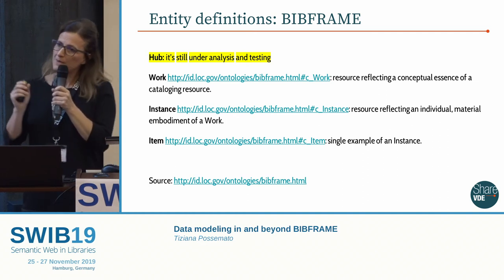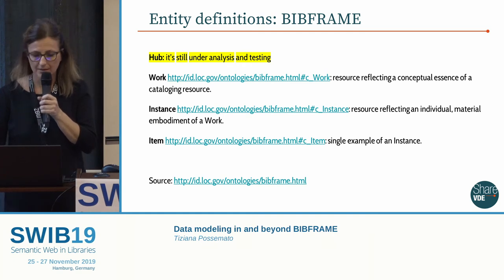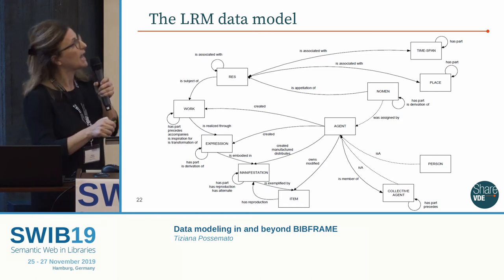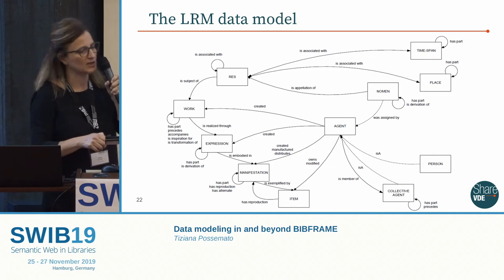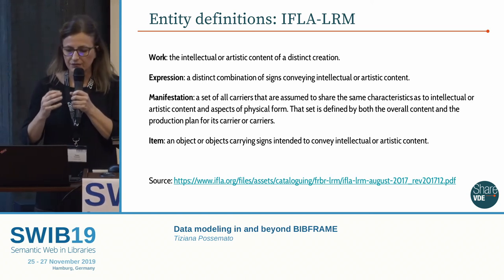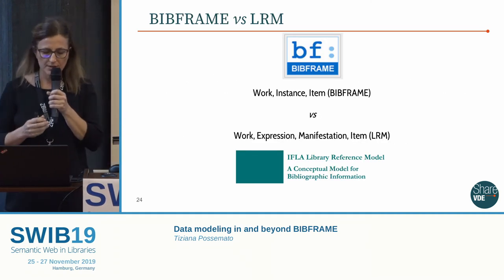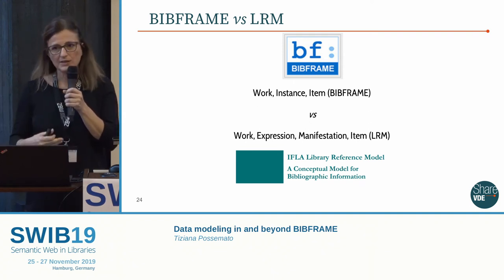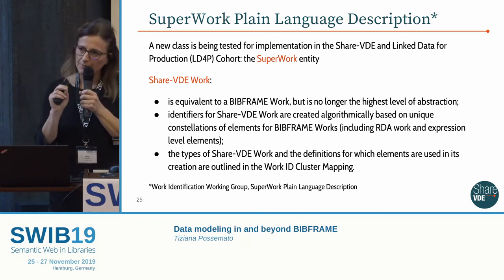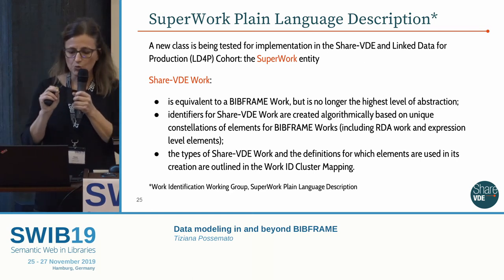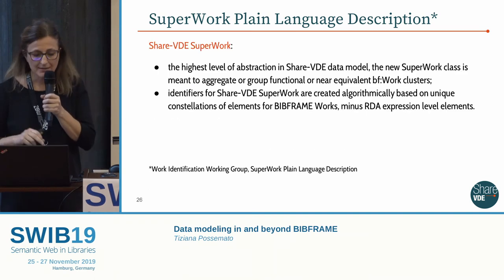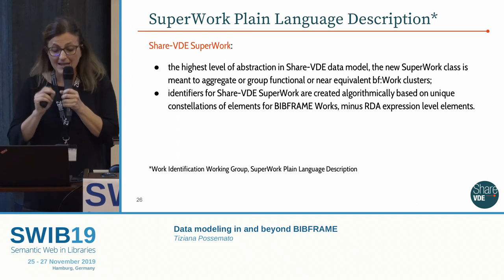In January 2019, the Library of Congress decided to test a new entity on top of the hierarchy — the Hub — to be closer to LRM and ShareVD models. We are waiting for that definition. We have included in our analysis the LRM data model, focusing on main entities such as Work, Expression, Manifestation, and Item, to better understand from a semantic viewpoint what the entity definitions of this model mean. The group started analysis to better define the entity of 'Work' in ShareVD, which is equivalent to a BibFrame Work but is no longer the highest level of abstraction.